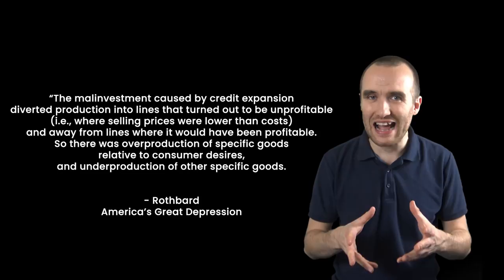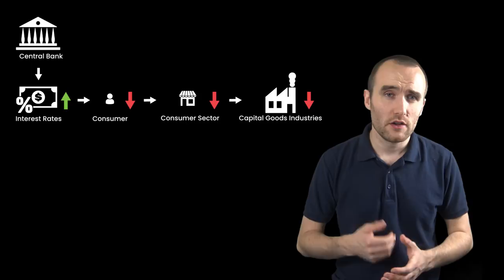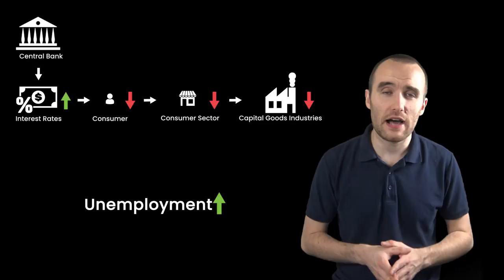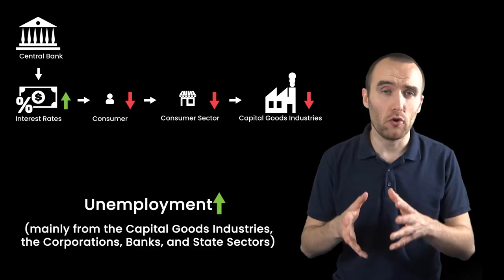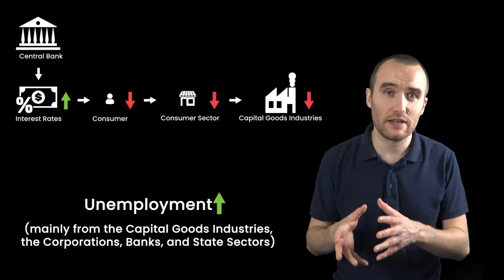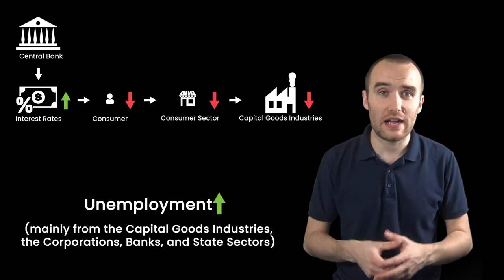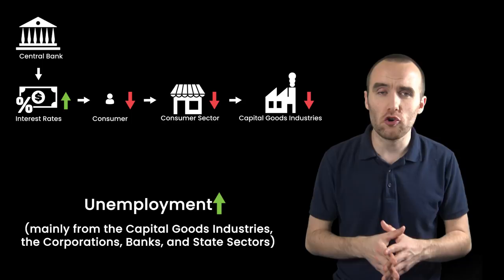So with the bubble popping, you'll find a lot of people unemployed. And you shouldn't be surprised to learn that most of this unemployment is coming from the capital goods industries and the big corporations and banks who thrived on easy credit but who are now going bust. The small businesses, which are doing their best to fulfill the actual needs of the consumer, will be fine for the most part, and some will even be able to expand during this time, helping to soak up the unemployed coming from the over-expanded capital goods industries.